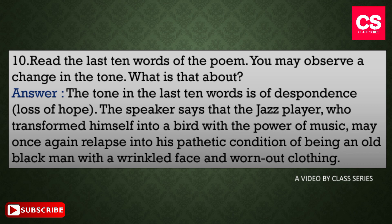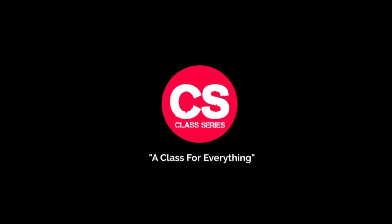The last and final question of this poem is: read the last ten words of the poem — you may observe a change in tone; what is it about? The answer: the tone in the last ten words is of despondence, which basically means loss of hope. The speaker says that the jazz player, who transformed himself into a bird with the power of music, may once again relapse into his pathetic condition of being an old Black man with a wrinkled face and worn out clothing.